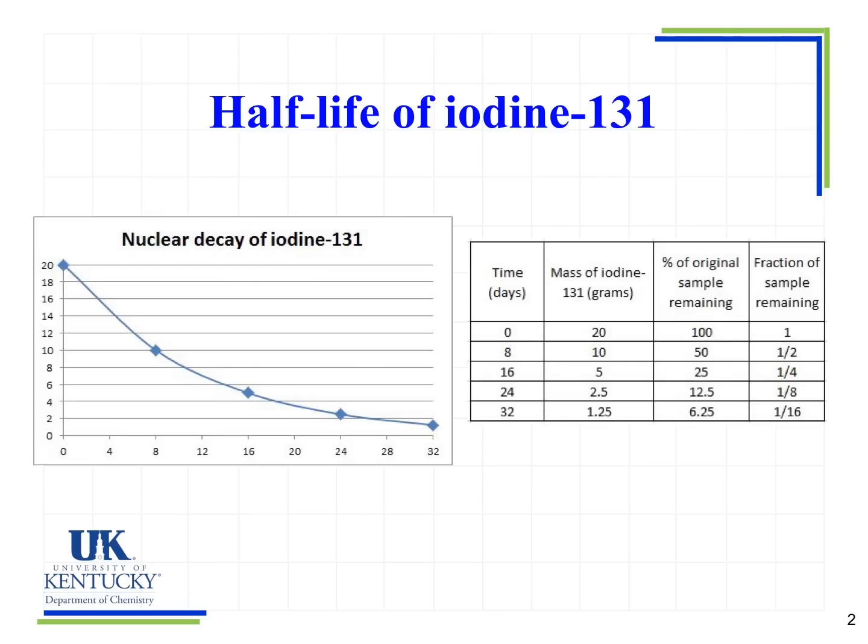What we're going to see here is independent of the type of particle that's emitted. An individual isotope like iodine-131 or radium-226 will each undergo a specific kind of decay, but for looking at half-life it doesn't matter what it is — they all follow the same general procedure.